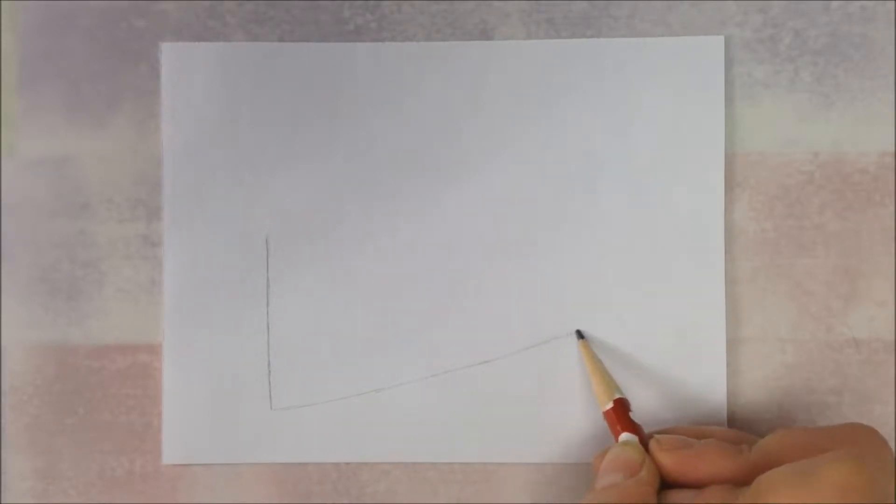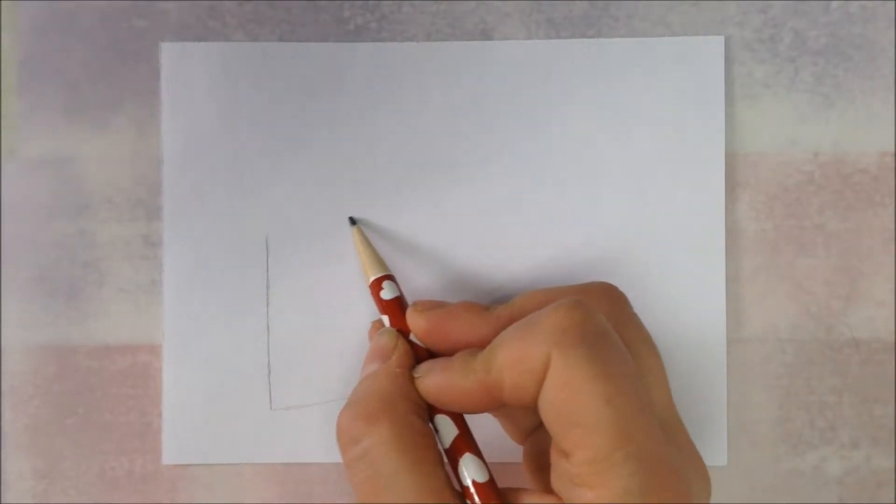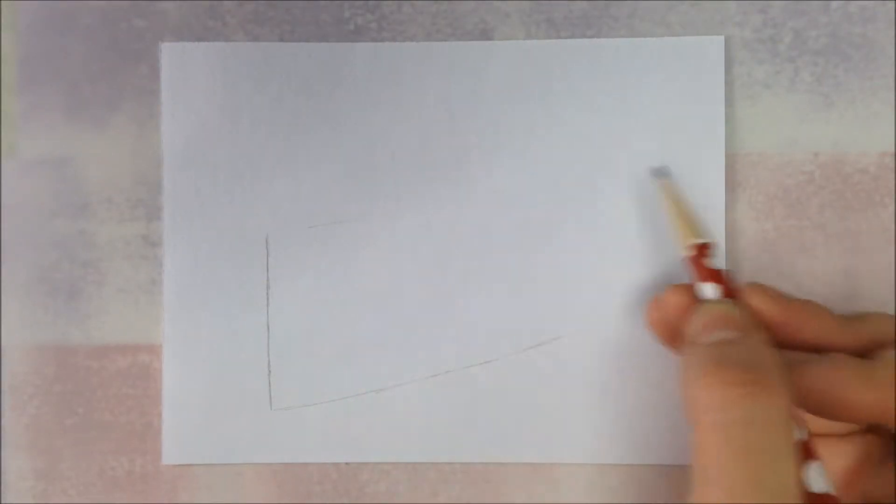So pretty long. Then up on the top, we're going to draw an imaginary line. So I just draw it really lightly. This is so I can follow where the frosting goes. And this line is the same line as the one on the bottom.